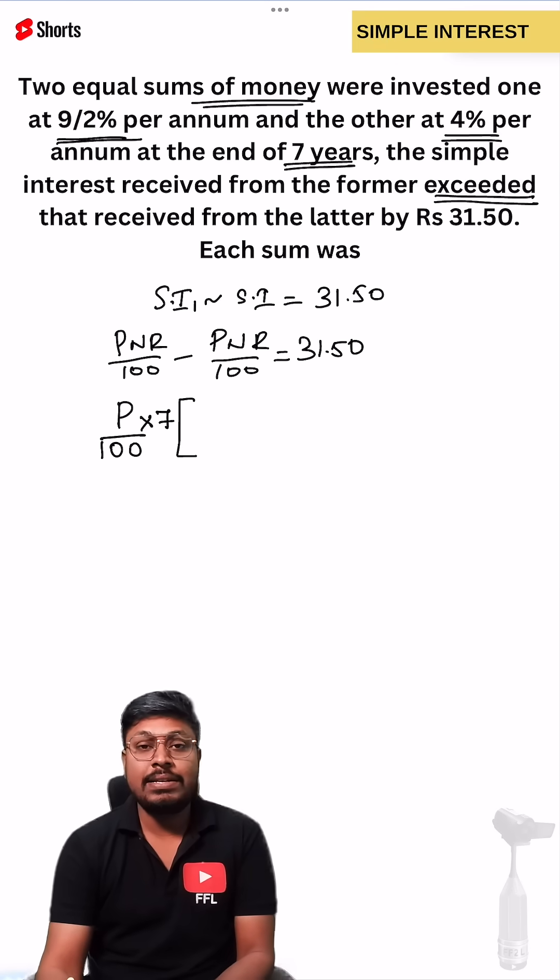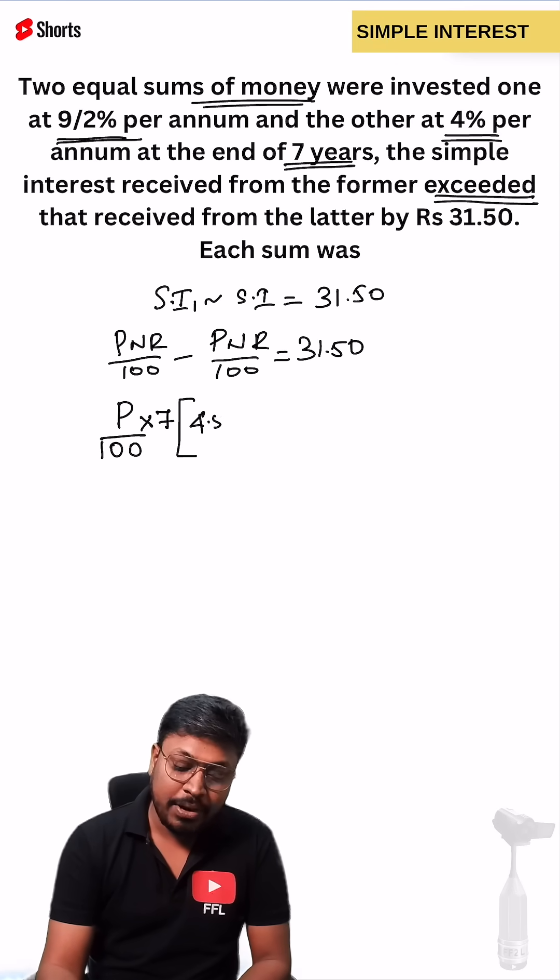Rate of interest - first rate of interest is 9/2 percentage, so 9/2 we can take it as 4.5 minus the second rate of interest, 4, equals 31.50.